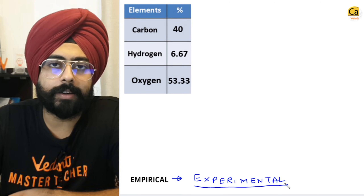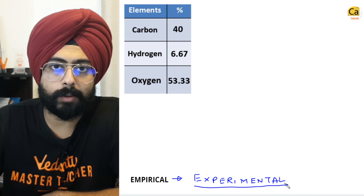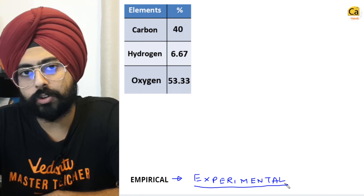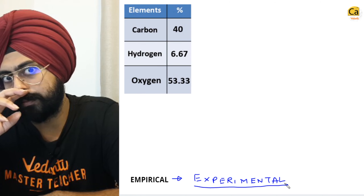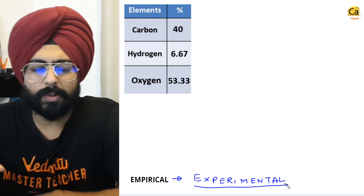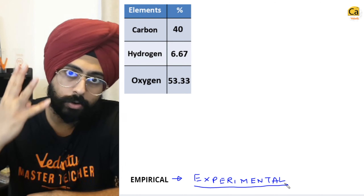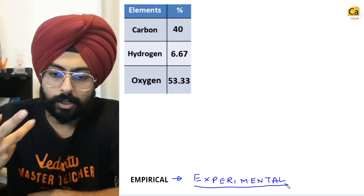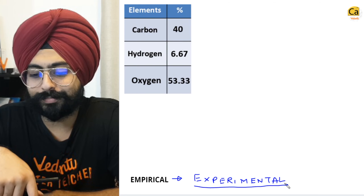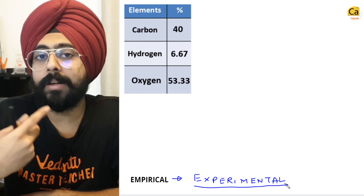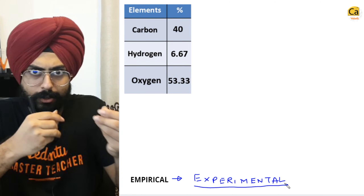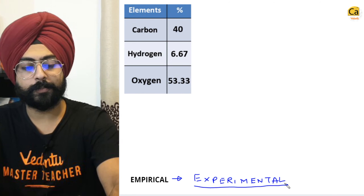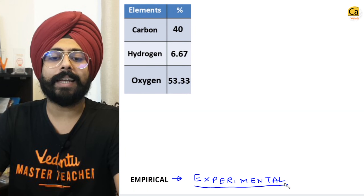Let's say you make Dal Khichdi every day, and you figure out that for one cup of Dal and one cup of rice, the best amount of salt is four teaspoons. This is a ratio calculated in your kitchen — an experimentally determined idea. You didn't do molecular research on Dal and rice; you just did an experiment and figured it out. This observation can be called an empirical observation.